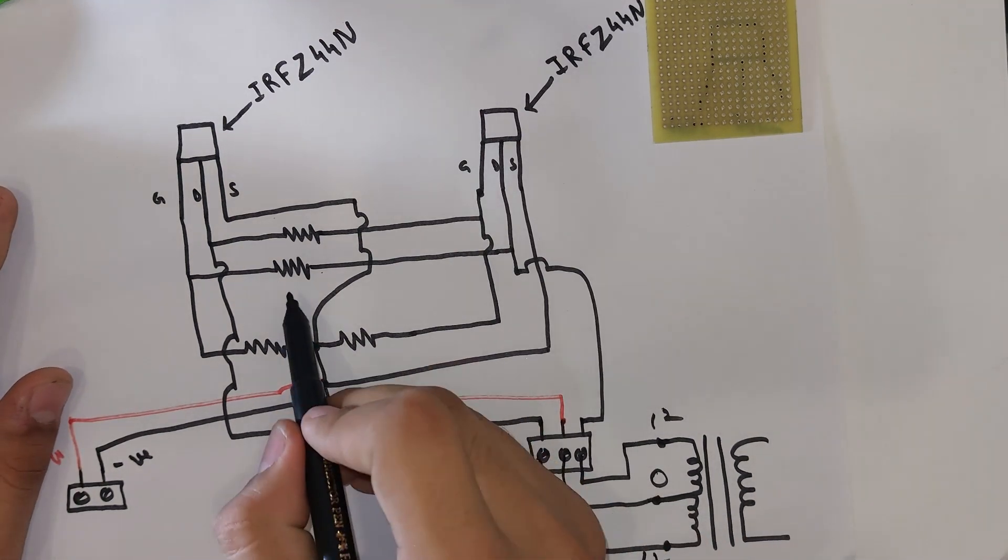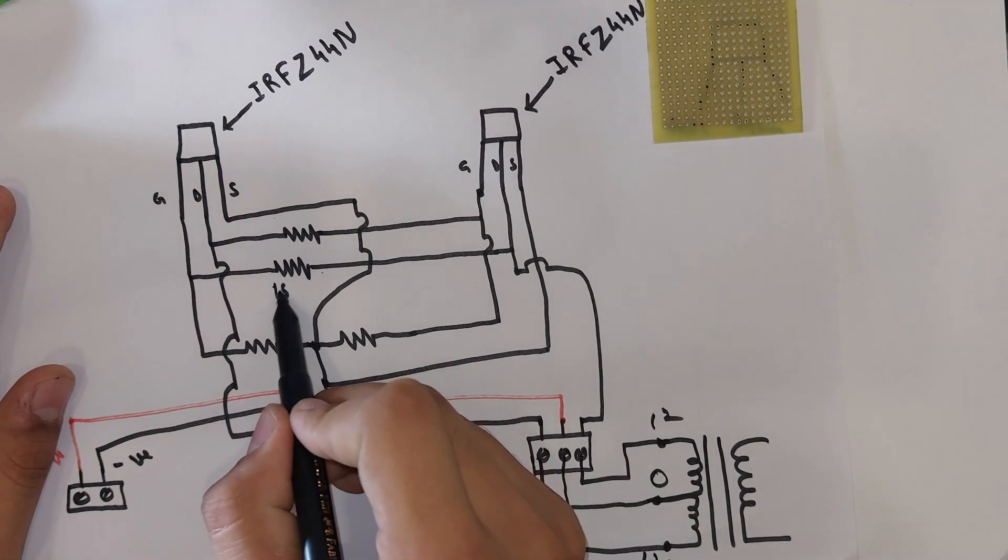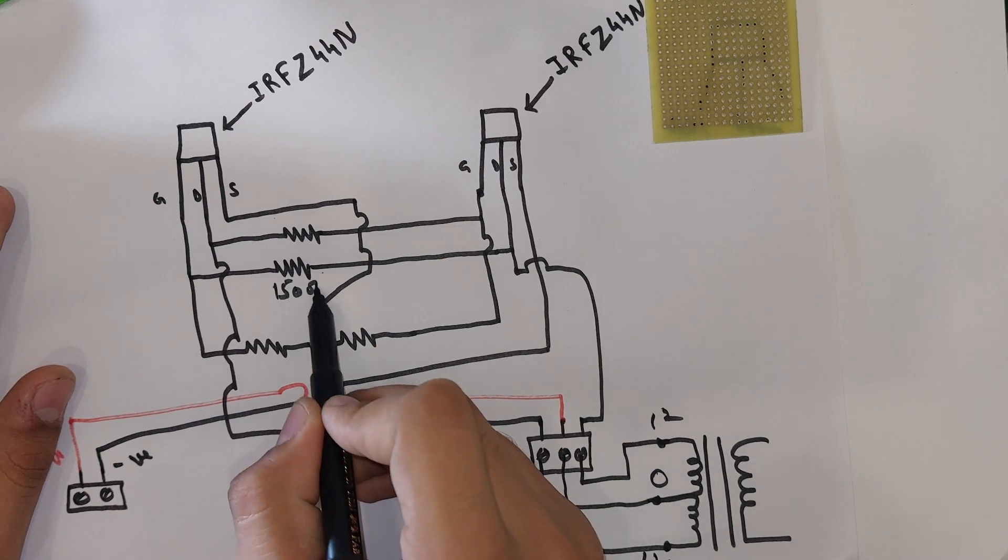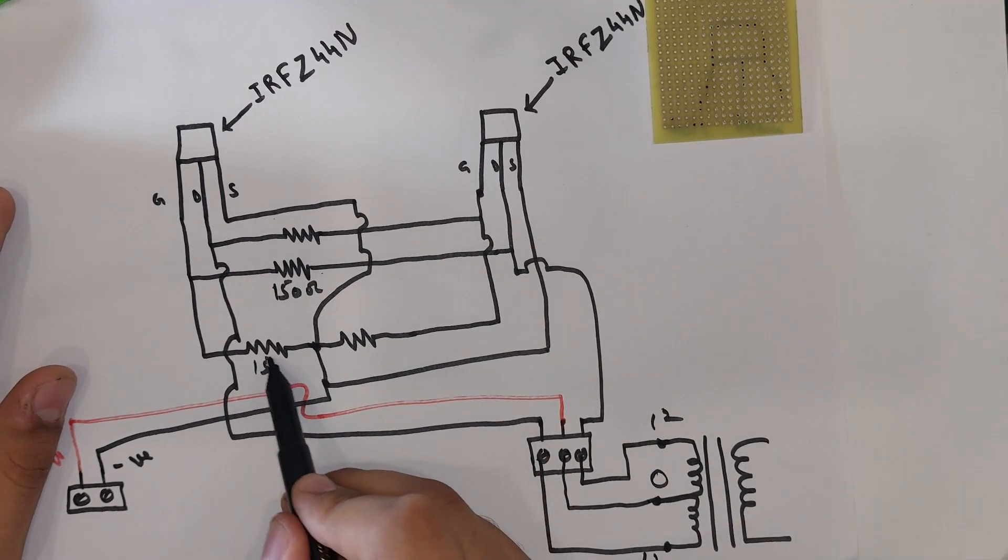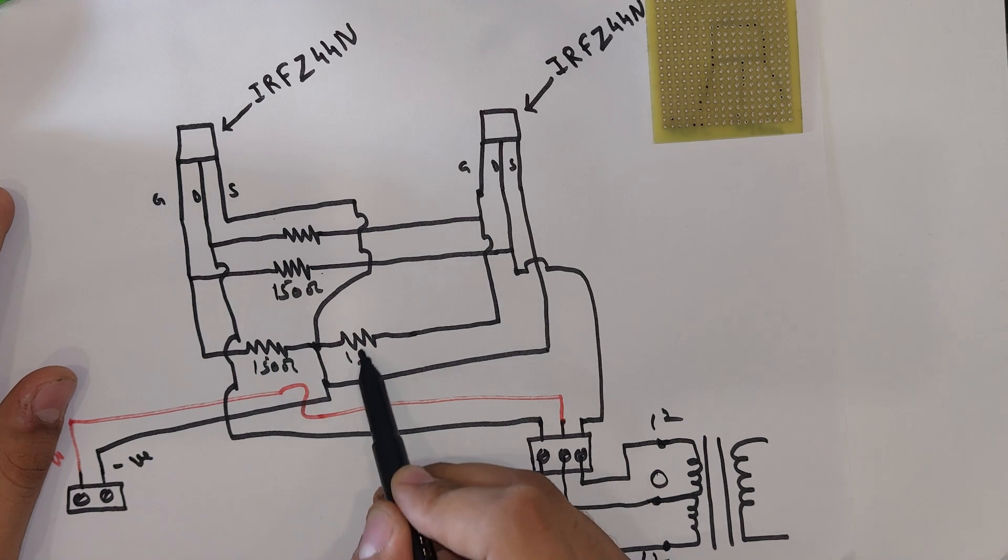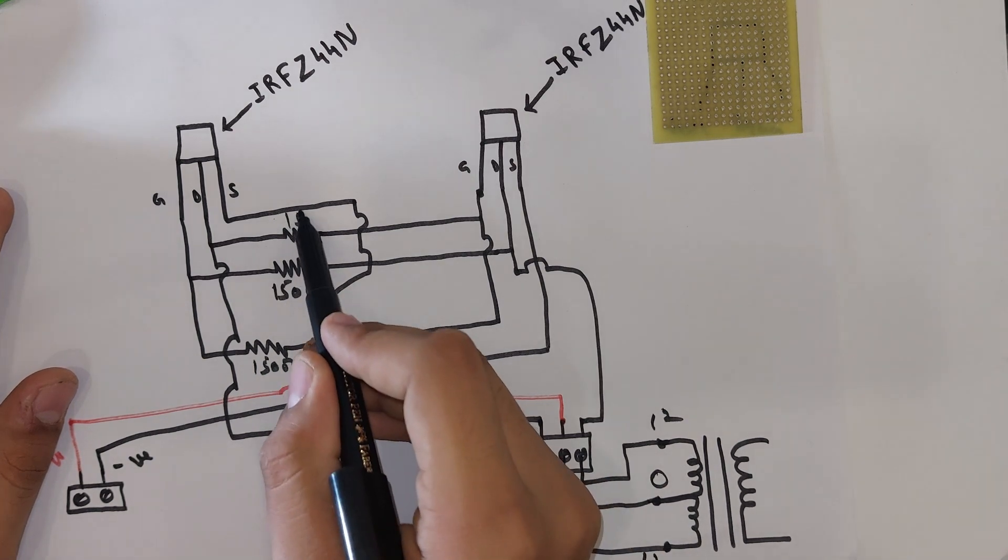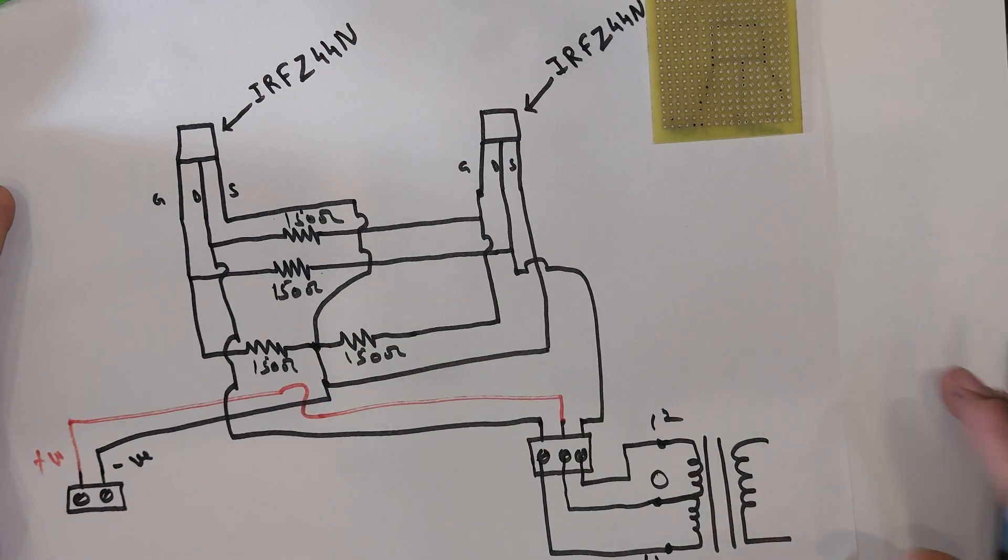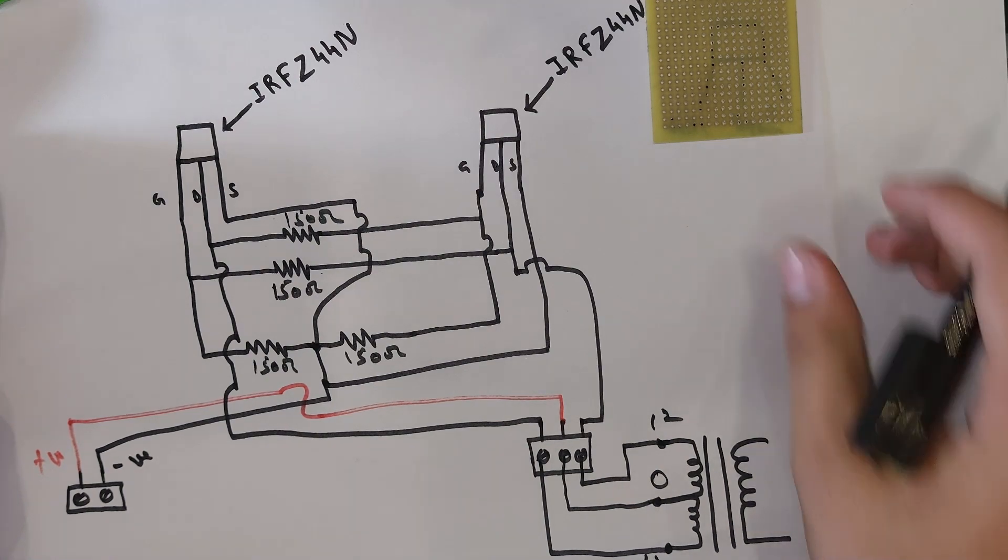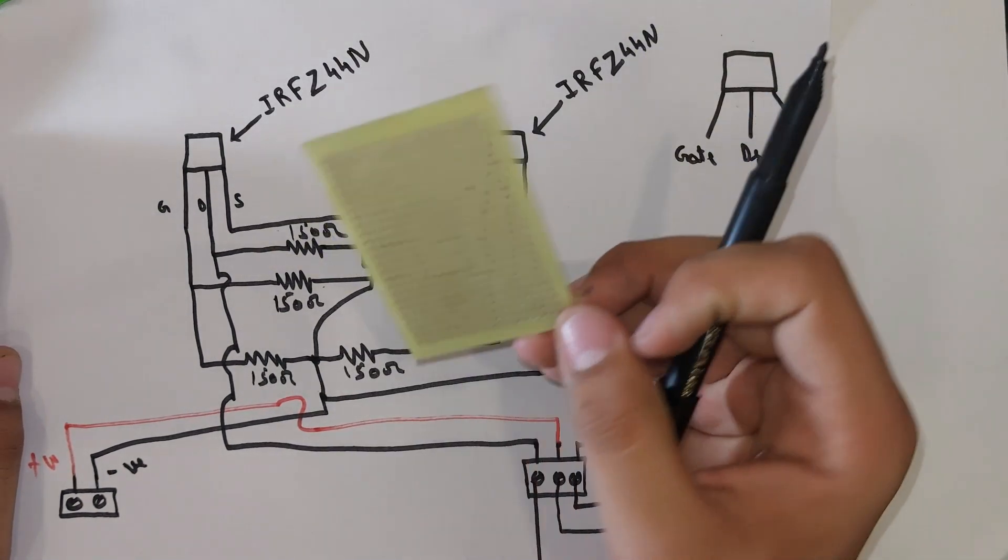We use 150 ohm resistors in this circuit. Now we can make this circuit on a PCB board.